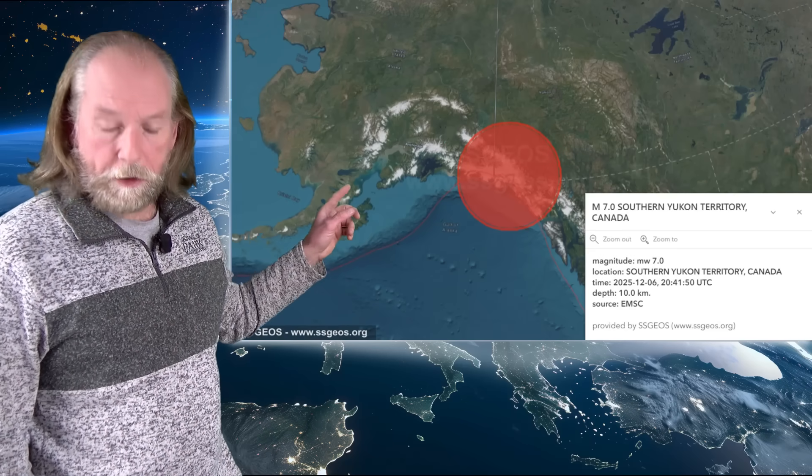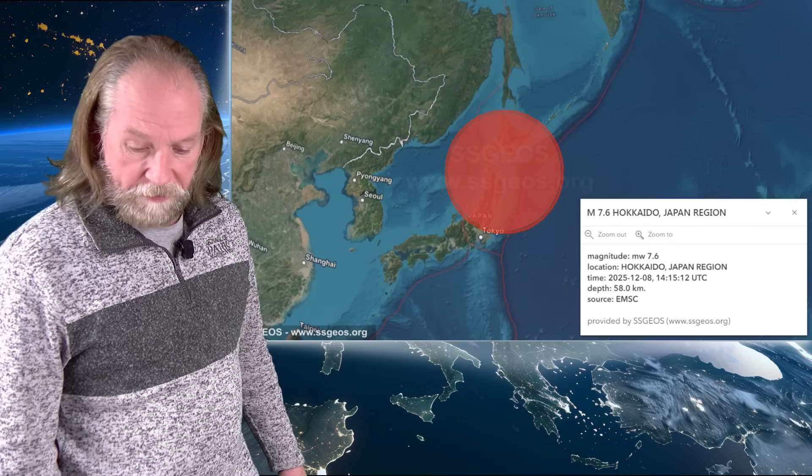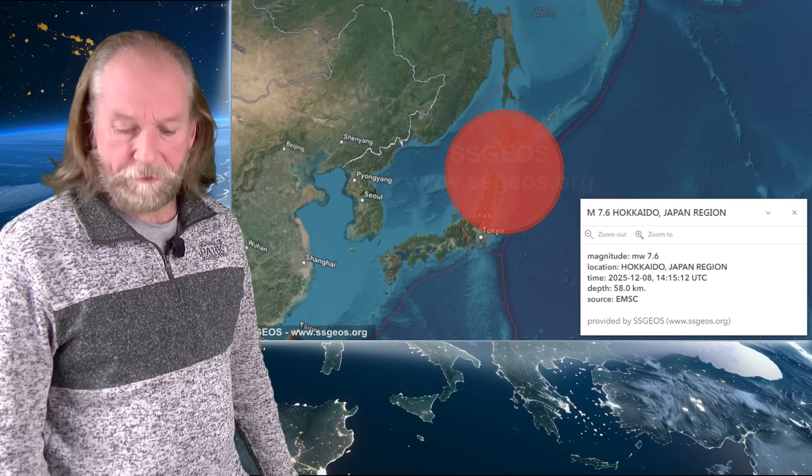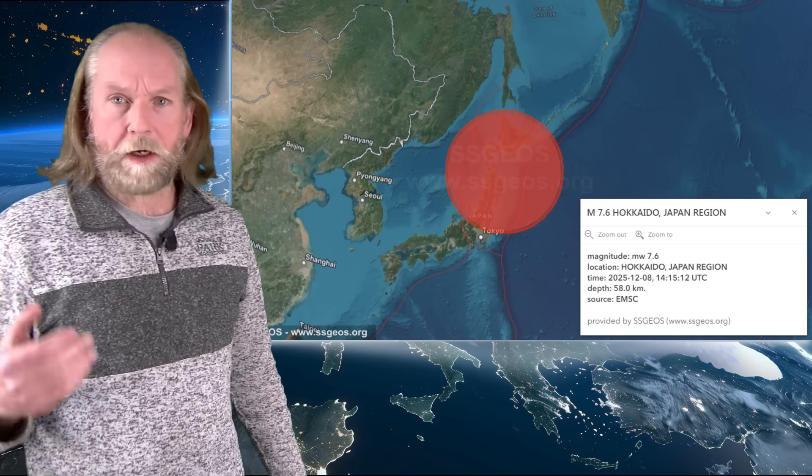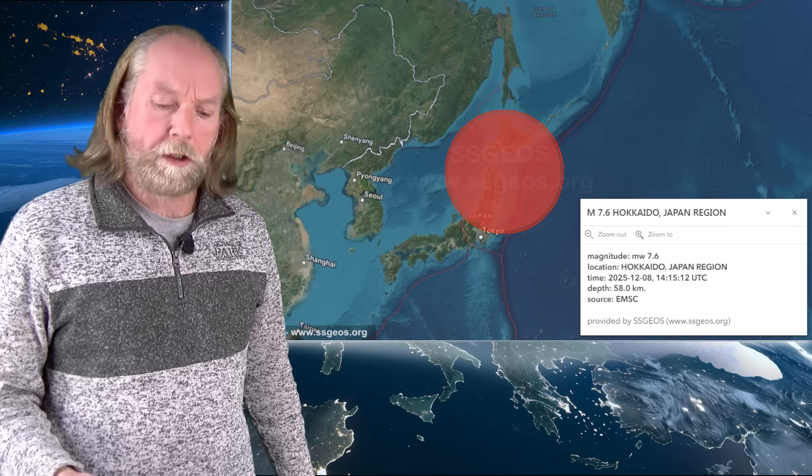The seven magnitude earthquake in Yukon territory Canada occurred later on the 6th, a major earthquake and a 7.6 really major earthquake in Hokkaido Japan and that's very much south of where the magnitude 8.8 earthquake occurred in Kamchatka in July.